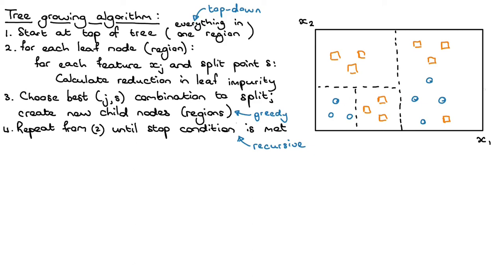Let's say we're considering a specific region and we're considering splitting on x2 — just looking at that second feature. One possible split position might be, let's say, here. In order to know how good that split is, we need some metric that tells us how good the resulting regions will be. Remember when we grew regression trees, we would consider a split and look at how much it would decrease the squared loss. But here we're doing a classification task with two classes, so we can't use the squared loss.